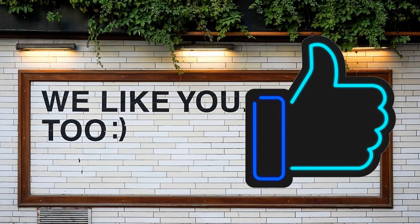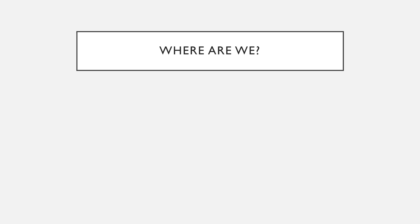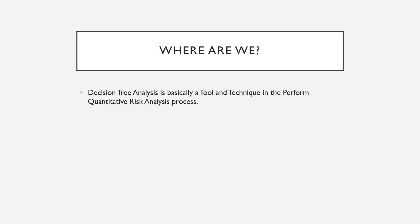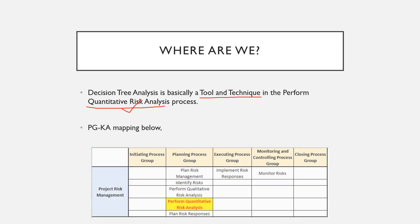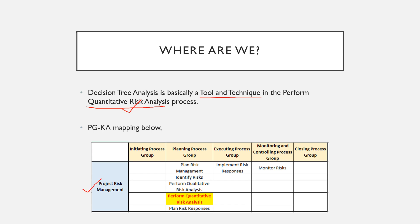Decision tree analysis is a tool and technique in the Perform Quantitative Risk Analysis process, which is part of the risk management knowledge area. Looking at the PMBOK mapping: risk management knowledge area is the knowledge area, planning process group is the process group, and within Perform Quantitative Risk Analysis there is a tool and technique known as decision tree analysis. We'll also need to discuss EMV, which we'll cover in the slides to come.